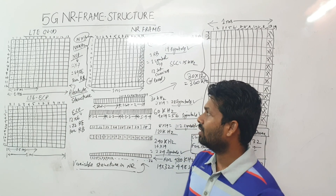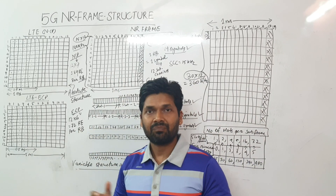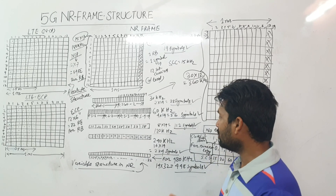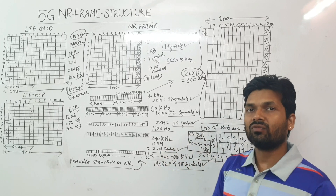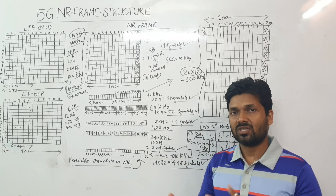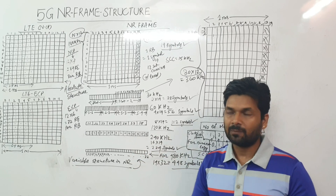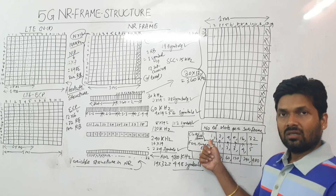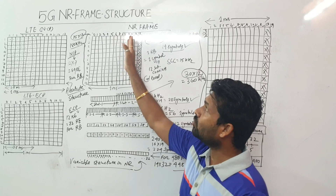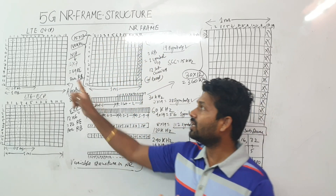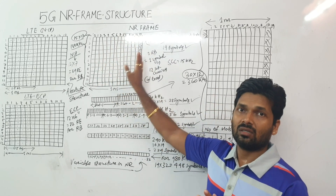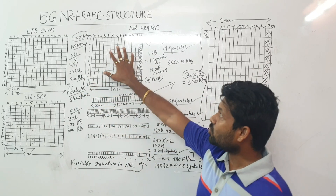These LTE structures are absolute because we use 15 kHz subcarrier spacing in LTE. But in NR, the number of symbols transmitted in one radio frame will vary depending on different mu values. Recall from our previous session: mu values of 0, 1, 2, 3, 4 give subcarrier spacings of 15, 30, 60, 120, and 240 kHz. In NR, one subframe contains just one slot of 14 symbols — no more slot one and slot two — and that one slot has 14 symbols and 12 subcarriers.